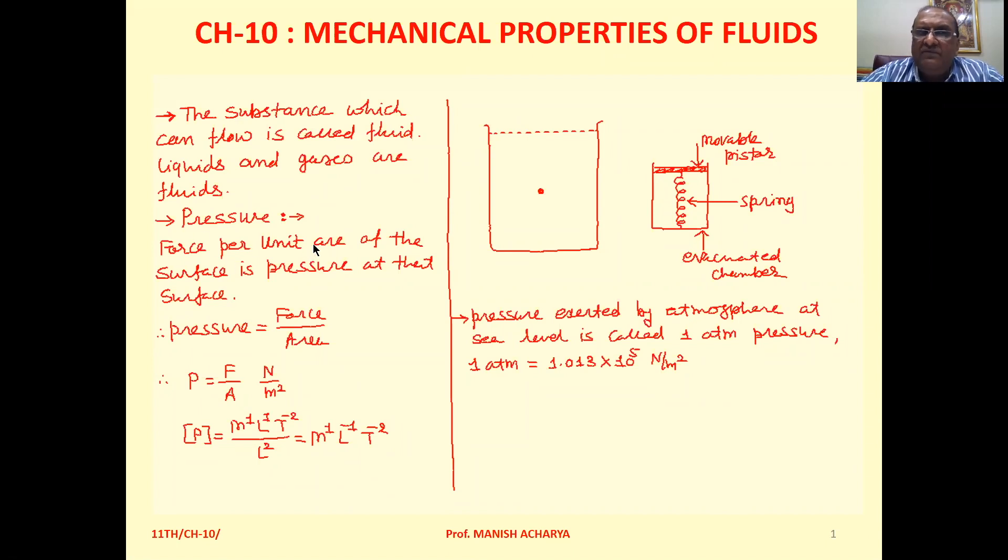The first very important physical quantity is pressure. Pressure is defined as the force per unit area of the surface. Simply, we can write pressure as force upon area.